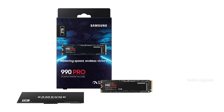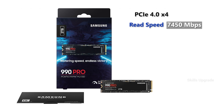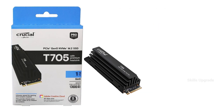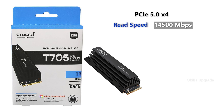Samsung has the 990 Pro, which uses PCIe 4.0 x4. The read speed is 7400 Mbps and the write speed is 6900 Mbps. The T705 uses PCIe 5.0 x4, with a read speed of 14500 Mbps and a write speed of 12700 Mbps.